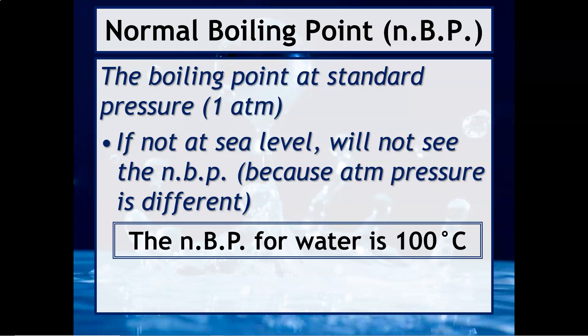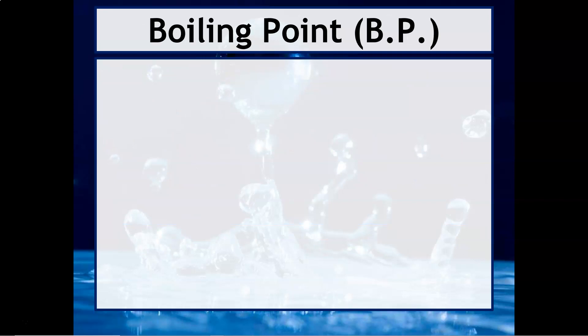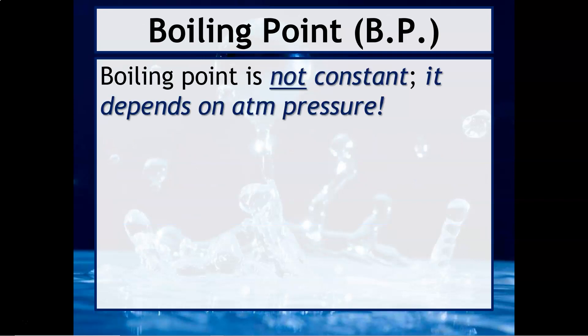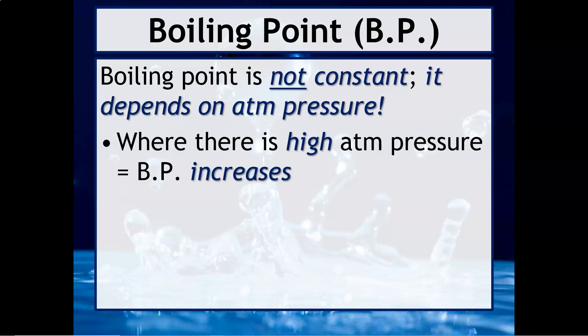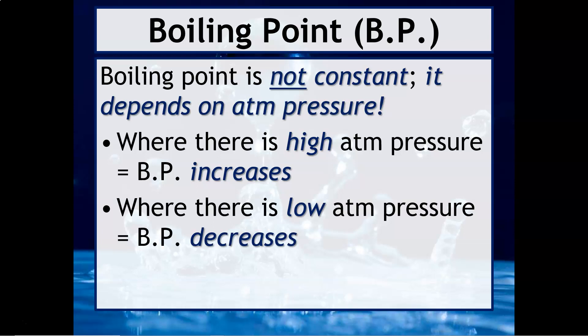The normal boiling point for water is 100 degrees Celsius. As mentioned, boiling point is not constant — it really depends on the atmospheric pressure. If you have high atmospheric pressure, the boiling point will increase. If there is low atmospheric pressure, the boiling point will decrease.